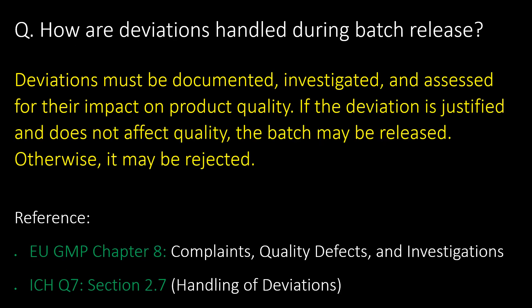How are deviations handled during batch release? Deviations must be documented, investigated, and assessed for their impact on product quality. If the deviation is justified and does not affect quality, the batch may be released; otherwise, it may be rejected. Reference guidelines: EU GMP Chapter 8 and ICH Q7 Section 2.7.